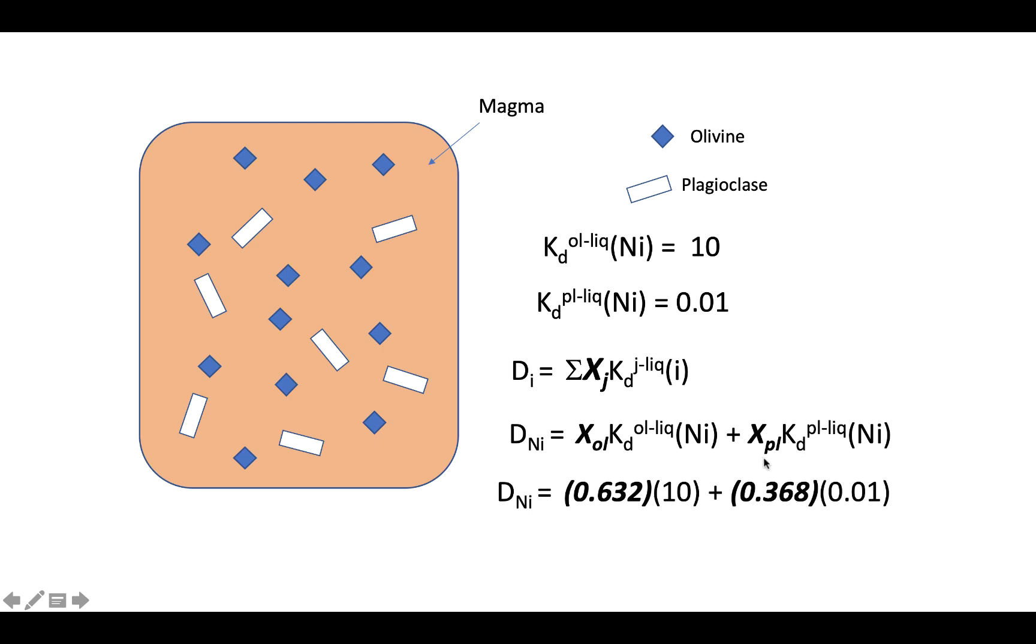To put some numbers on this, the D for nickel, the bulk distribution coefficient, would be the amount of olivine, which we found earlier was 63.2%, multiplied by its partition coefficient, which is 10, plus the product of the amount of plagioclase, which is 36.8%, multiplied by its partition coefficient, which is 0.01. And when we do that calculation, we find out that the bulk distribution coefficient for nickel is 6.32.